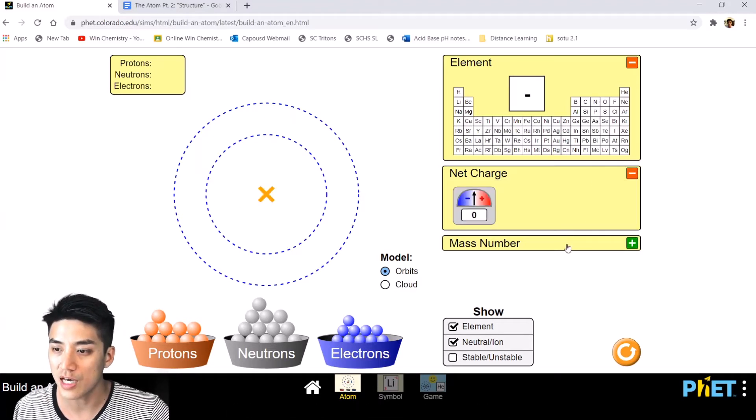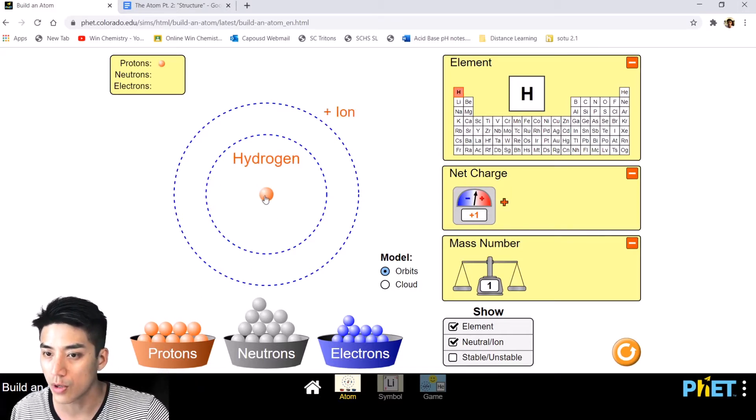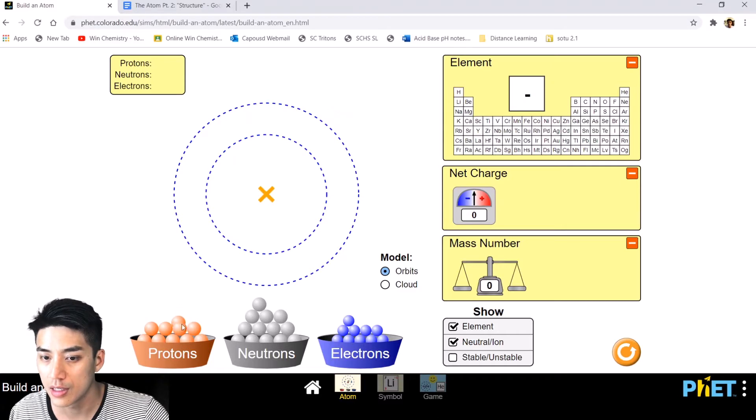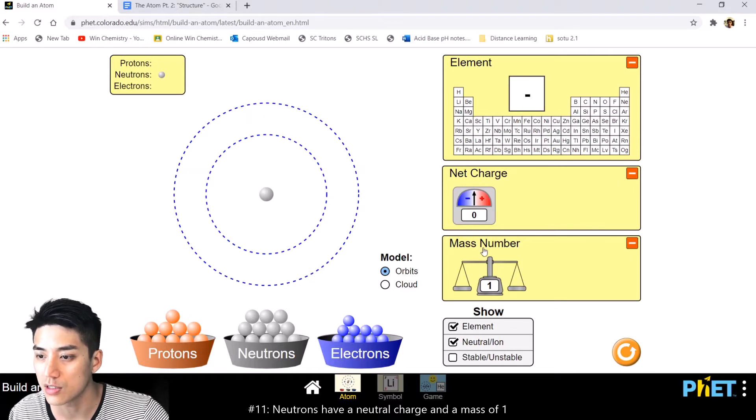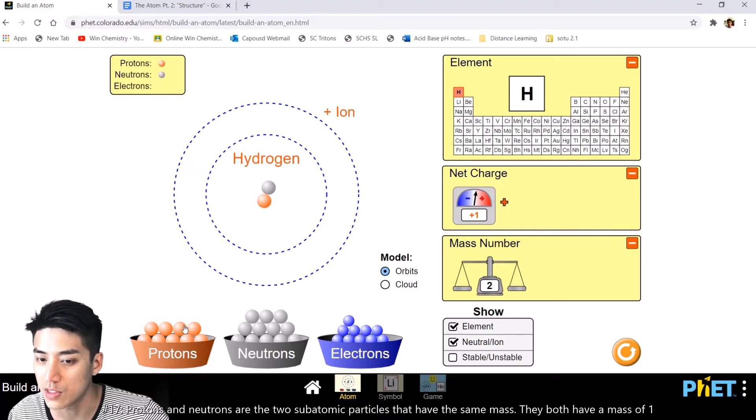Let's expand two of these tabs: net charge and mass number. Let's go through each particle. A proton has a charge of plus one and a mass of one. A neutron, as suggested by its name, is neutral, so it has no charge, but it has a mass of one. So protons and neutrons weigh the same. They each weigh one. So one proton, one neutron has a mass of two.